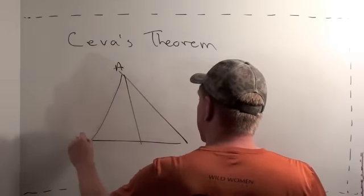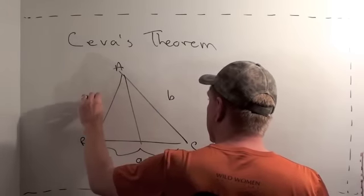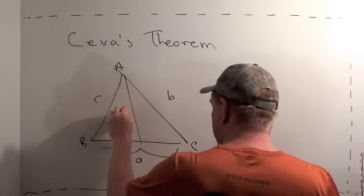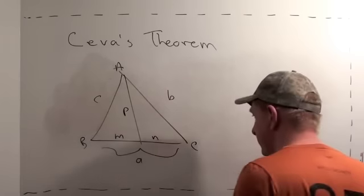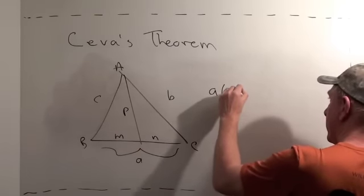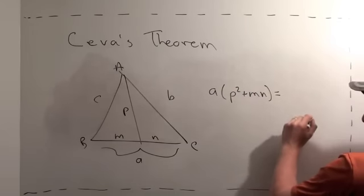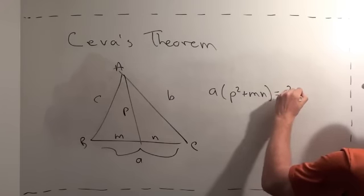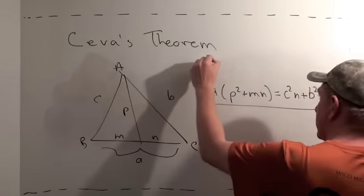A, B, C, so let's call this side length a, this side length b, this side length c, this cevian p, length p, and m, and n. Then we get the amazing formula, a times the quantity, p squared plus mn, equals c squared n plus b squared m. This is called Stewart's theorem.